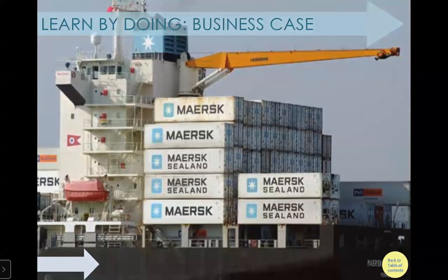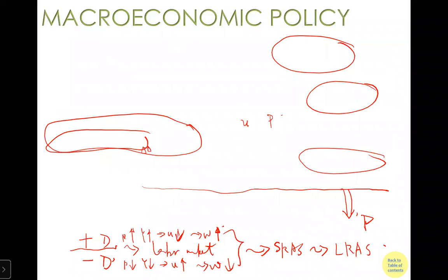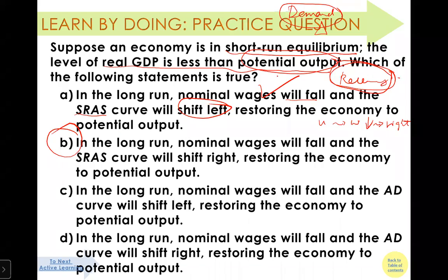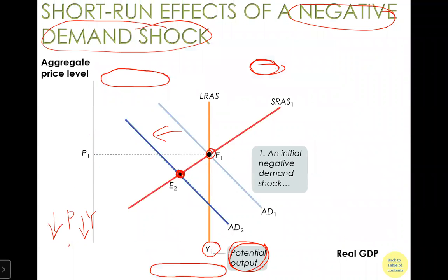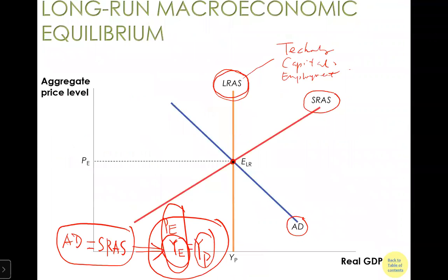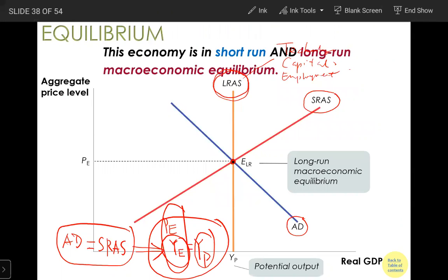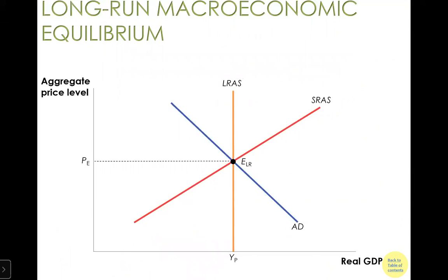Let me quickly summarize what we have learned in this chapter. In this chapter, we bring supply and demand all together, and we relax the assumption that prices are given. In this chapter, the price will be determined in equilibrium. We start with aggregate demand — where does this aggregate demand curve come from? It comes from the income-expenditure model covered in the previous chapter.